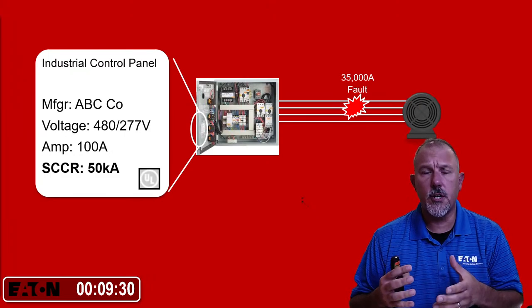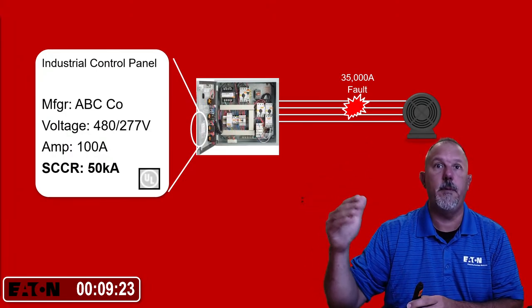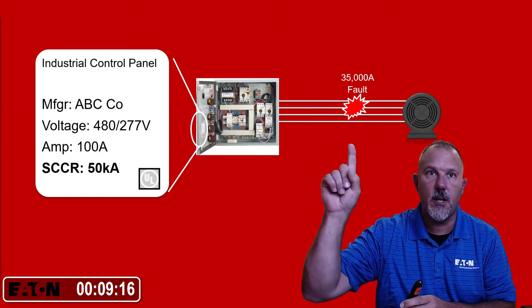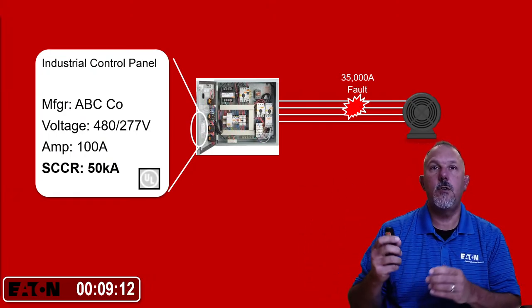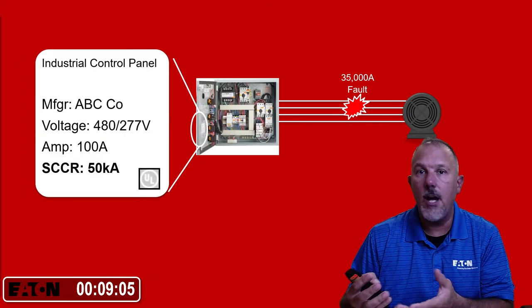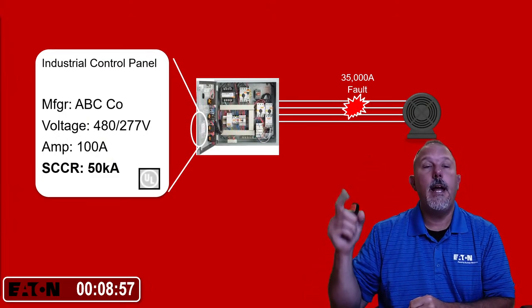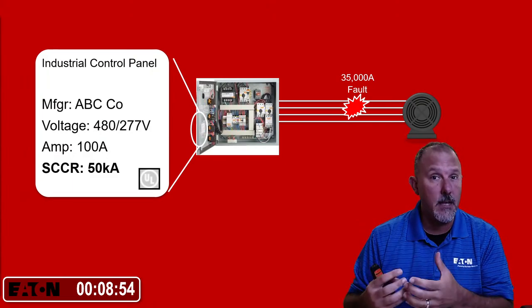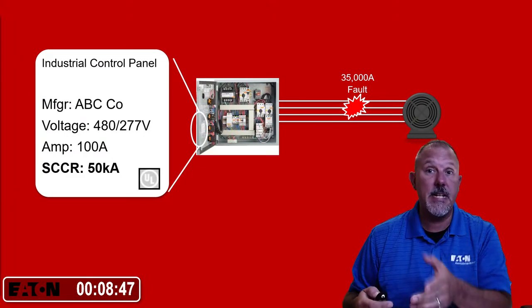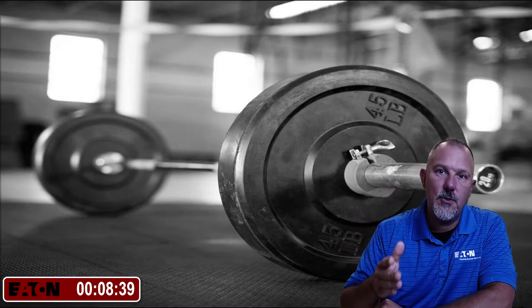Another way to explain SCCR: the fault is happening downstream of the equipment, not inside it. When an industrial control panel lets current flow through it, all the parts and pieces have to hold together. In this example, I have 35,000 amps of calculated bolted fault current RMS and a rating of 50,000 amps — I'm applying this product within its ratings. It's not going to achieve what my buddy Dan Neeser calls an 'unintended rapid disassembly in the field.'